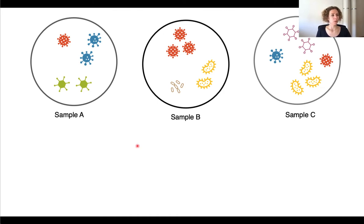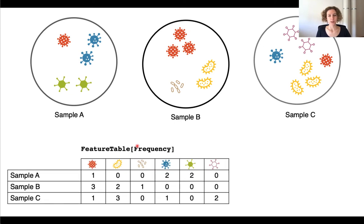So in practice when we do this with QIIME2, QIIME2 does it for us of course, and it provides us with a feature table which is basically the same what we just did manually. So we look at sample A, we have one red one, we have two blue ones, two green ones, and so on.